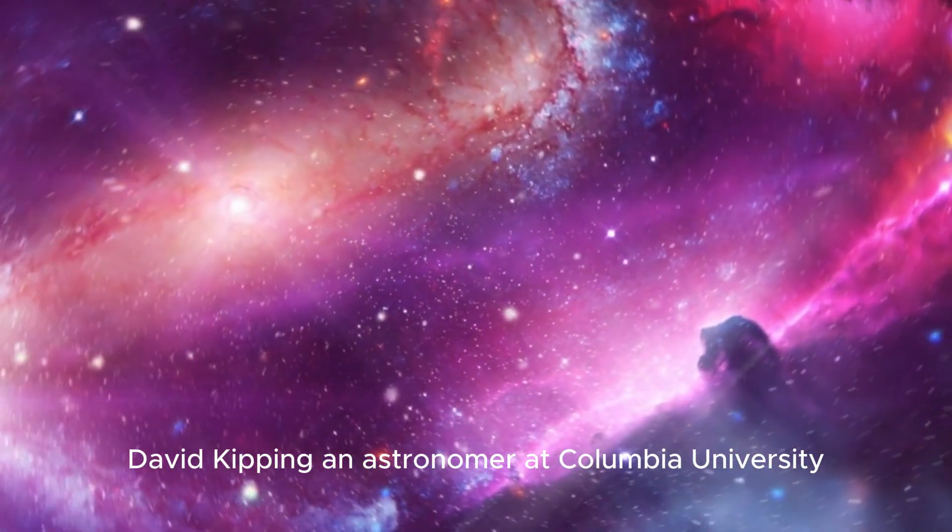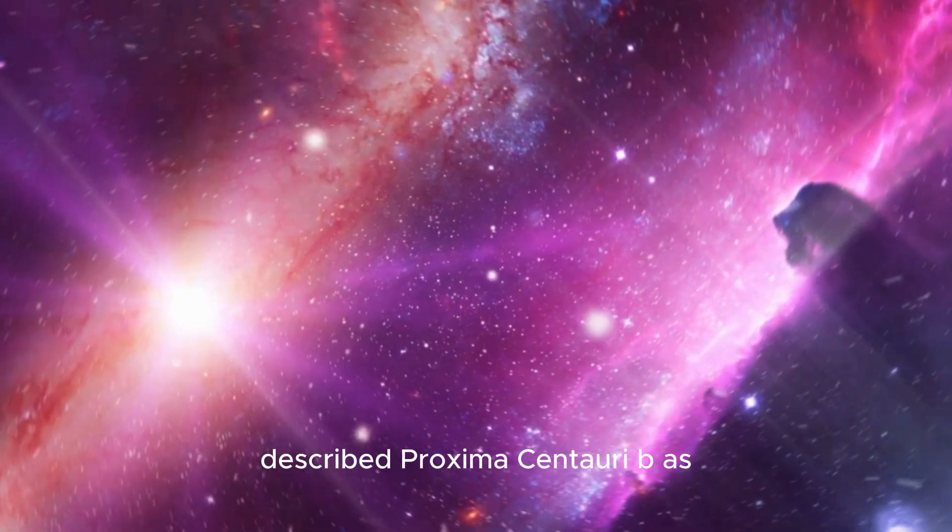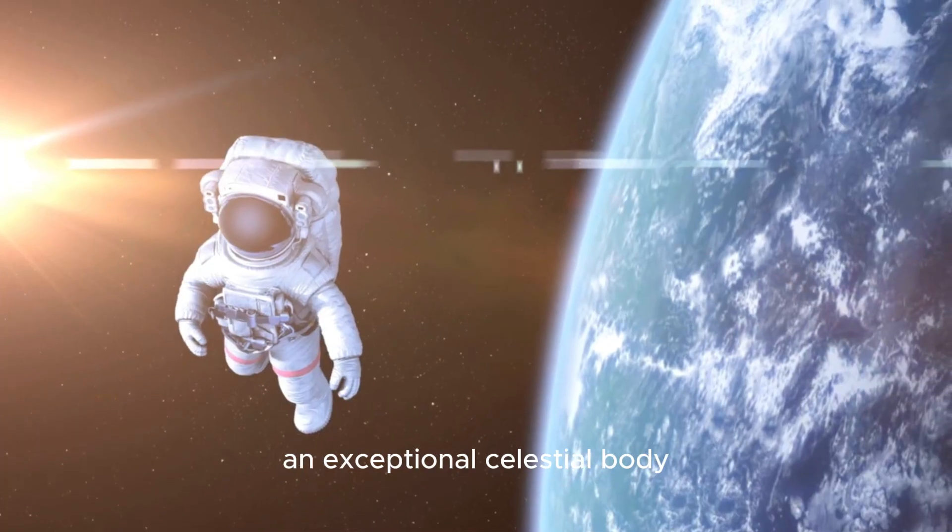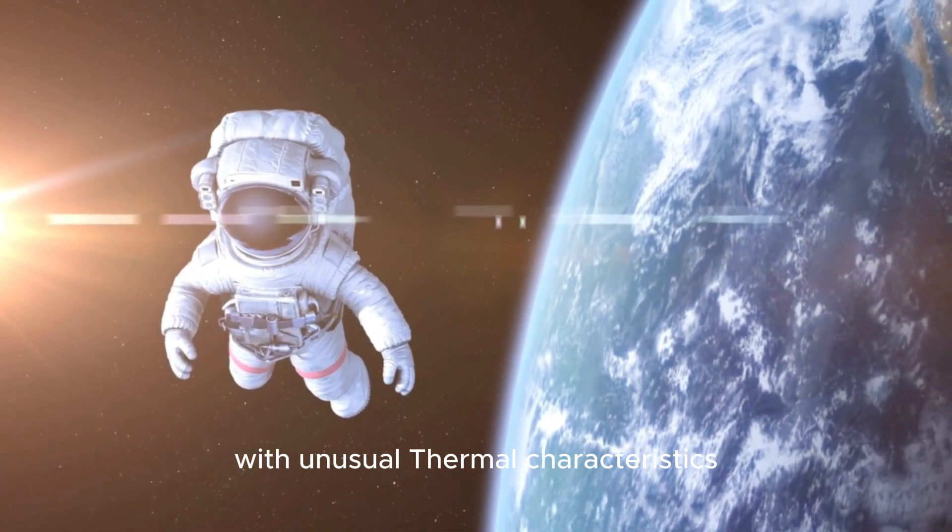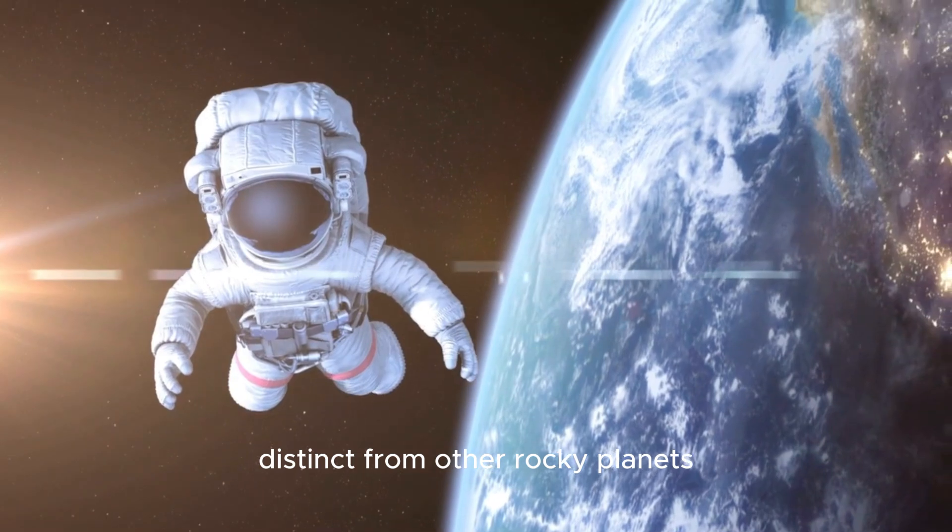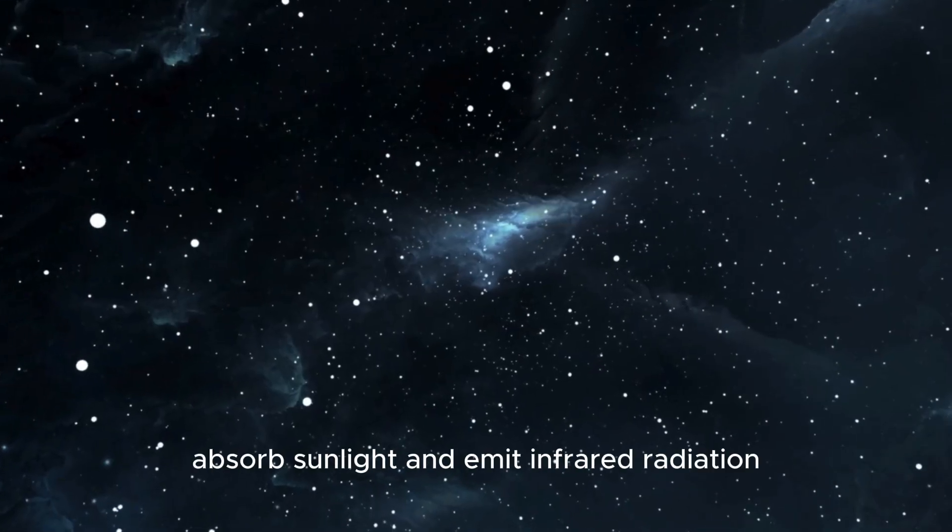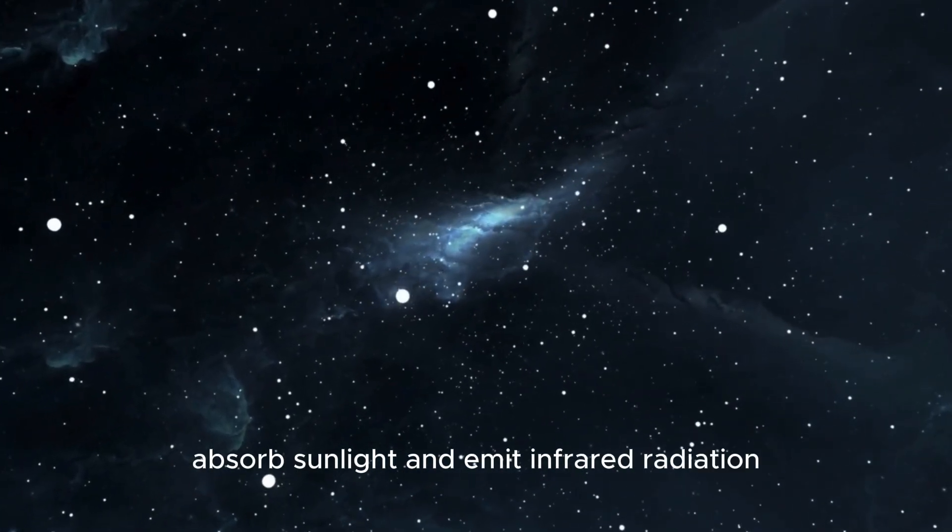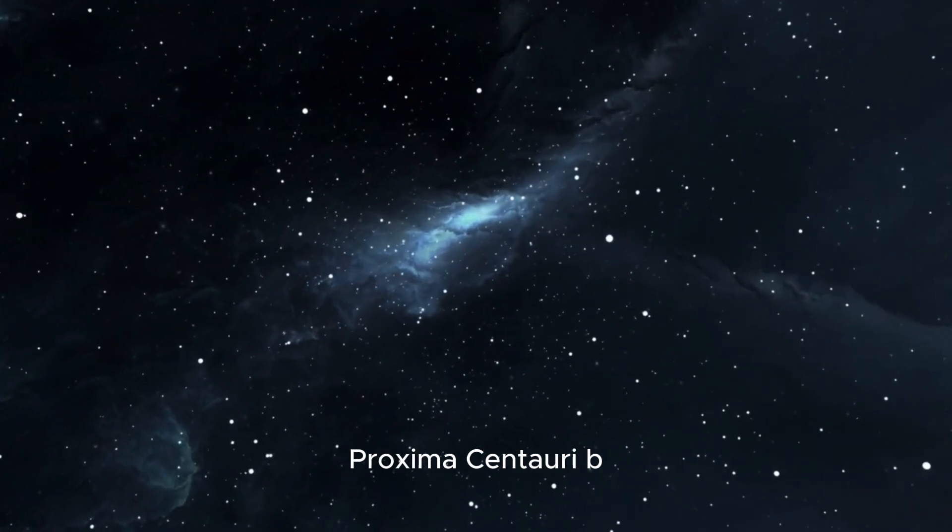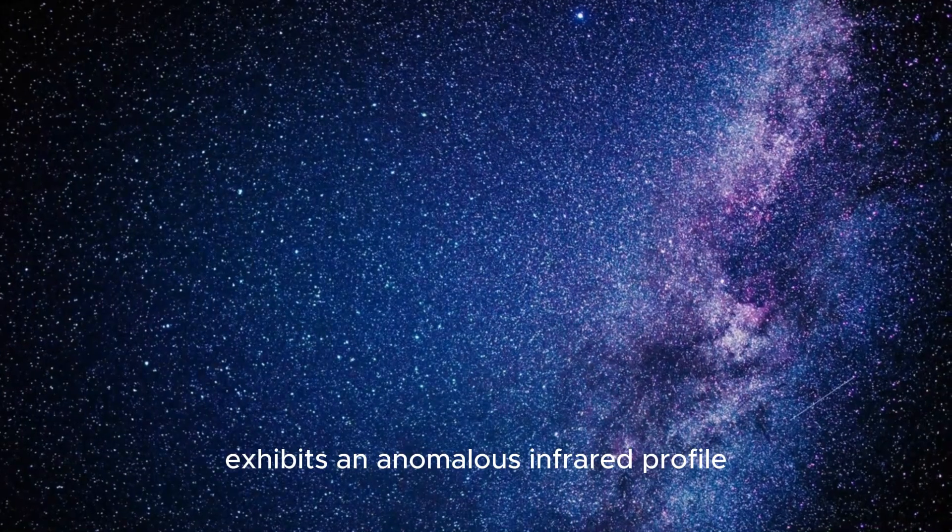David Kipping, an astronomer at Columbia University, described Proxima Centauri b as an exceptional celestial body with unusual thermal characteristics distinct from other rocky planets. While most planets absorb sunlight and emit infrared radiation, Proxima Centauri b exhibits an anomalous infrared profile.